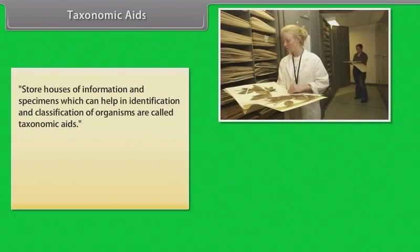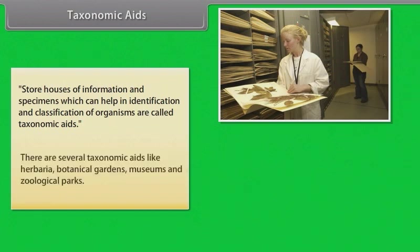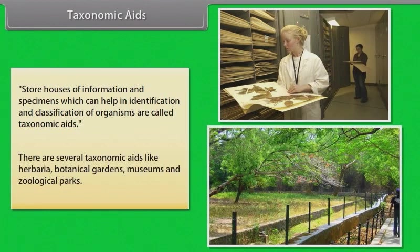Storehouses of information and specimens which can help in identification and classification of organisms are called taxonomic aids. There are several taxonomic aids, including herbaria, botanical gardens, museums, and zoological parks.